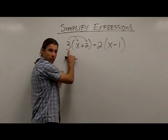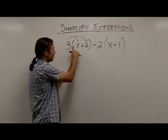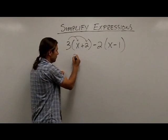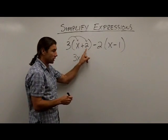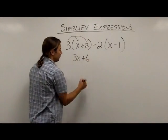So this tells me to multiply the 3 times both of these terms. So the first thing I do is go 3 times x, which is 3x. Now I'm going to take 3 times this positive 2, which is going to give me positive or plus 6.